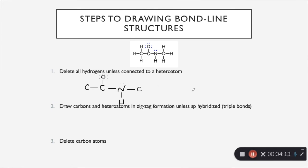And then the next step is going to be to draw the carbons and the heteroatoms in a zigzag format, unless it is an SP hybridized bond like we talked about earlier. That would not be drawn in a zigzag form. So there we go. It's the exact same as up here. It's just drawn in this structure.